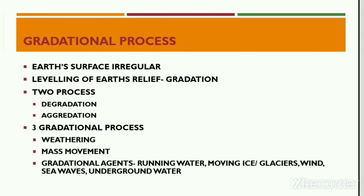The three types of exogenic processes are weathering, mass movement, and gradation. Rock weathering can be defined as the disintegration and decomposition of rocks at the same place. Mass movement is the downslope movement of weathered material mainly due to gravity; sometimes water acts as a lubricant to this mass movement. The earth's surface is highly uneven in nature, and this natural irregularity is termed as relief. The process of leveling up of the earth's land surface is termed as gradation.